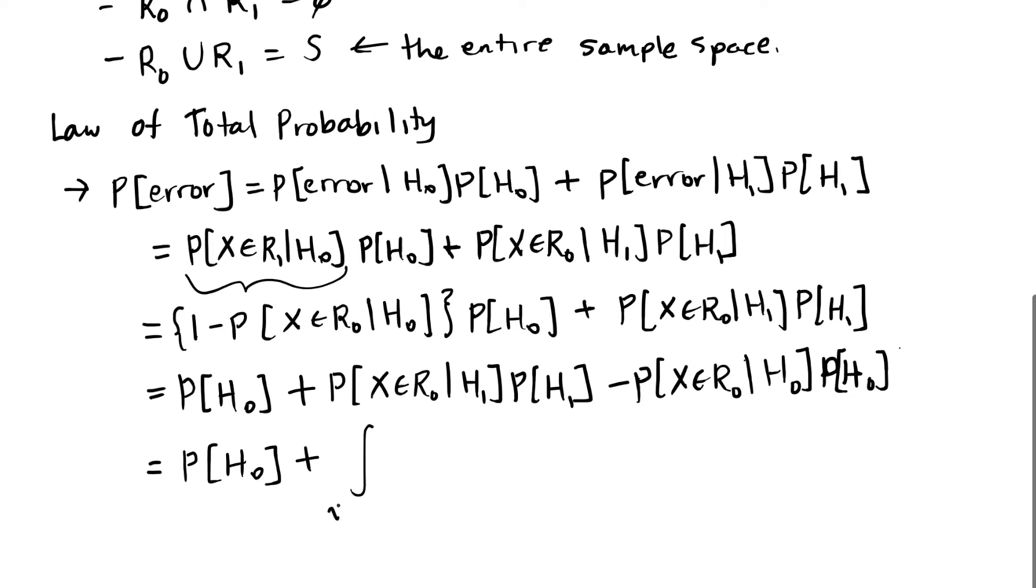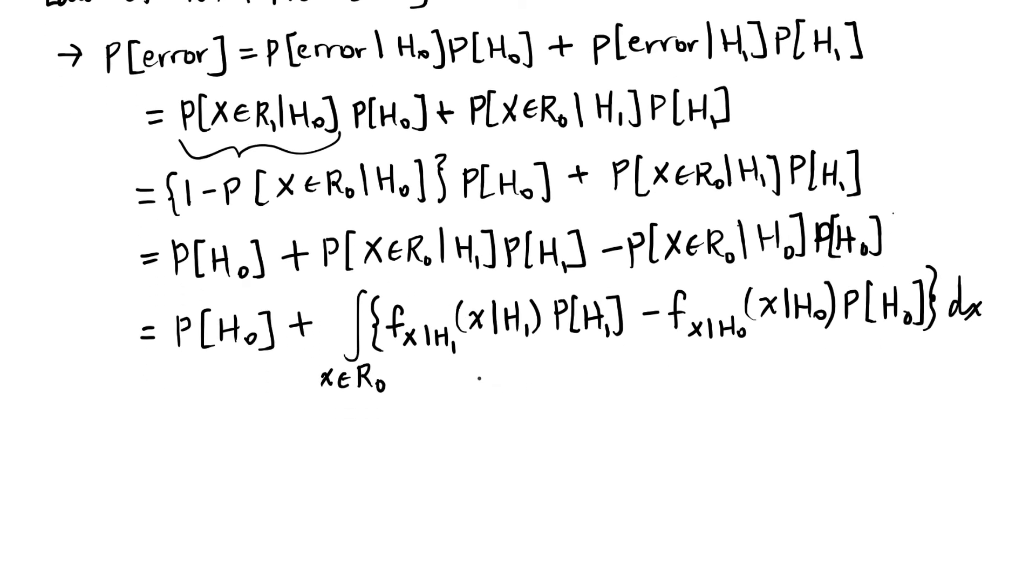I can write the probability that X is in region zero as an integral over the area in which X is in R0, and I can integrate this product of the PDF of X given H1 multiplied by this probability of H1. And then the other probability of X in region zero, I can do the same thing except it is the PDF of X given H0, the first hypothesis that symbol zero was sent. And so now I have one integral over this difference between these two kind of joint probabilities, the probability of X given H1 multiplied by the probability of H1 minus the probability density function of X given H0 multiplied by the probability of H0, again integrated over the area R0.